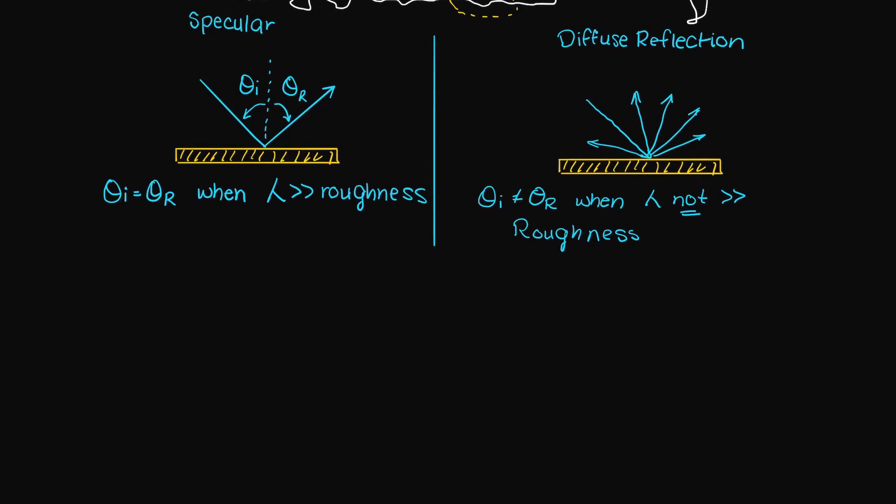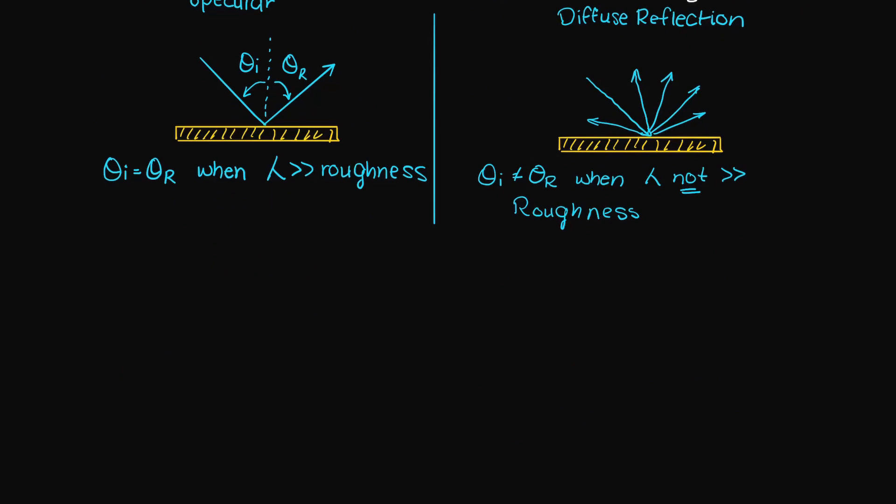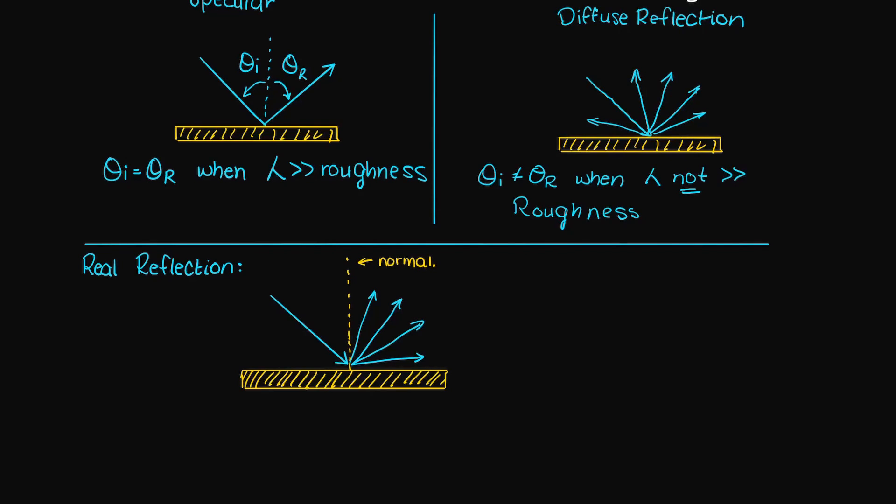Although specular and diffuse reflections are important ways to analyze radiation incident on a given surface, due to radiant energy occurring over a wide distribution of wavelengths and surface roughnesses typically varying along a material surface, we typically end up with something of a mixture between diffuse and specular on a real surface.